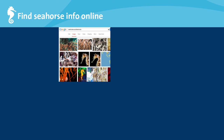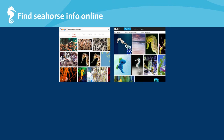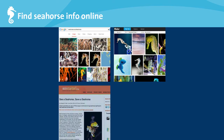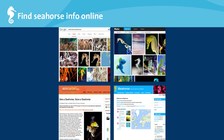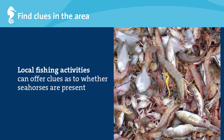Other ways to find seahorses include looking on the internet. Use search engines, look through seahorse photos, blog posts, and articles. And don't forget to look on iSeahorse sightings. Local fishing activities can offer clues as well. Look through catches at fishing landing locations to see if seahorses were caught in the general area. If so, ask where they were caught. You can also check out a fish landings toolkit that is available on the iSeahorse website.